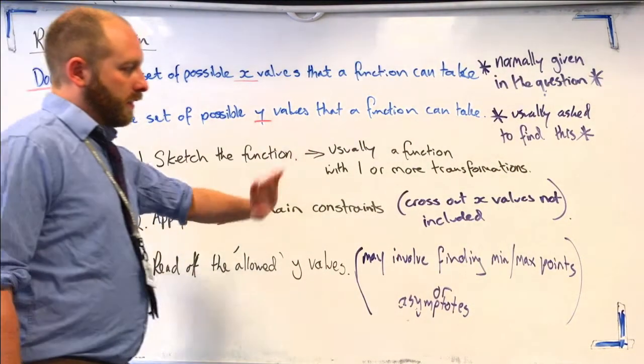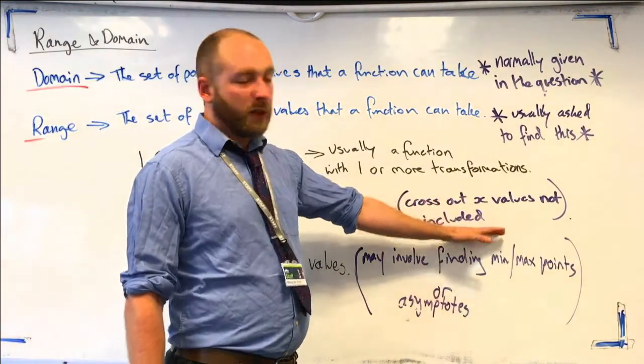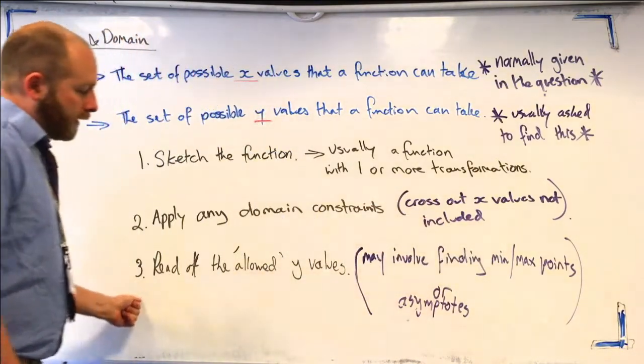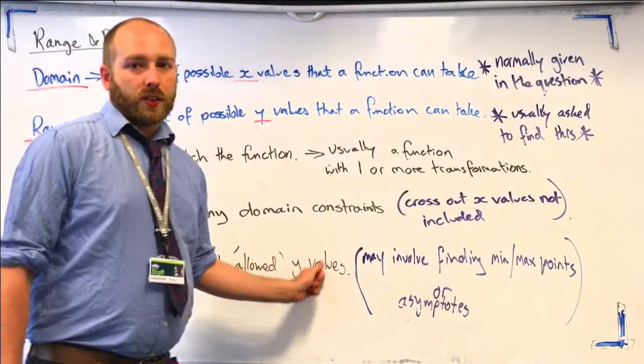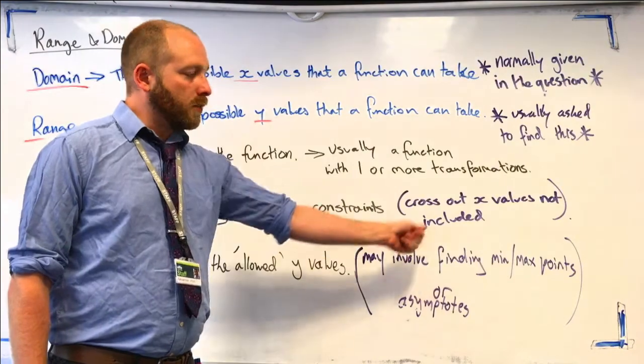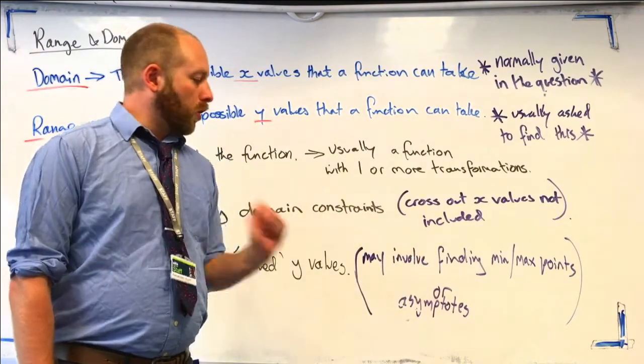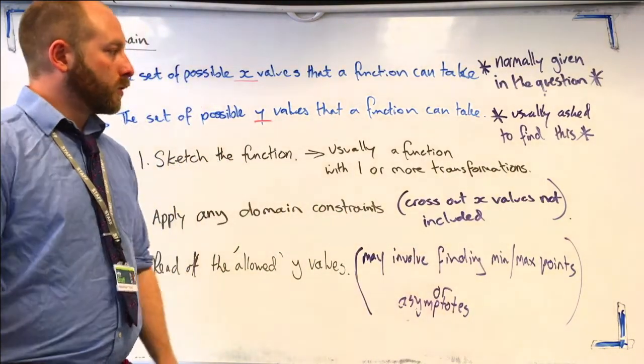Apply any domain constraints, so cross out the x values that you're not allowed or that aren't included in your function. And read off which y values your function is allowed to take, which might involve min max points or asymptotes. Cool, let's try some examples.